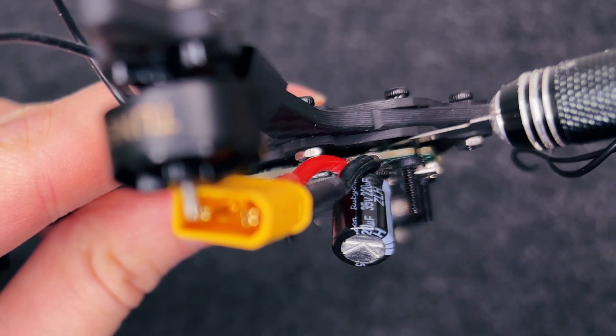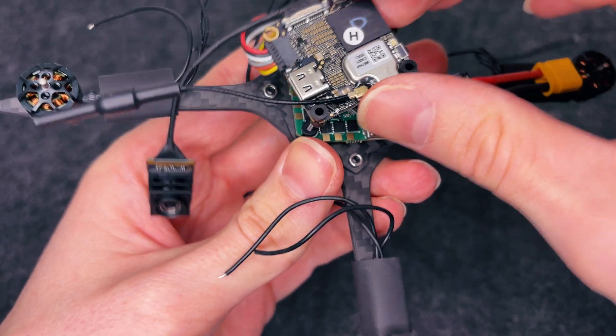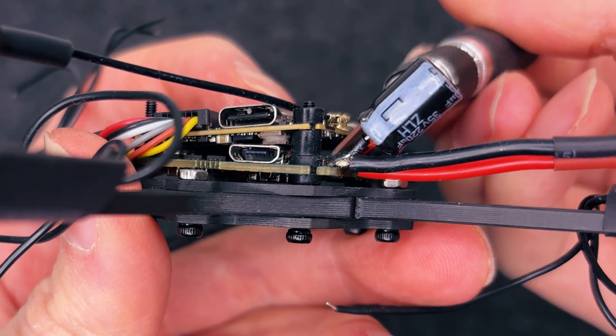One more thing, make sure your flight controller isn't touching the frame. And definitely don't let the O4 air unit and FC make contact. That's a fast track to a short circuit. And trust me, you don't want that.